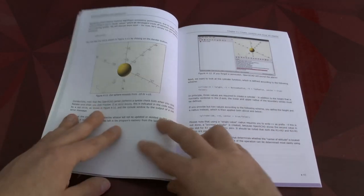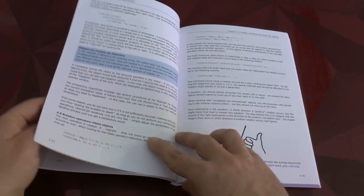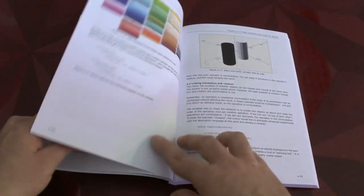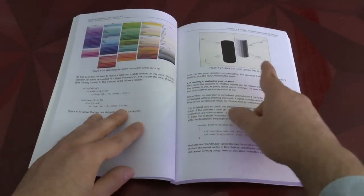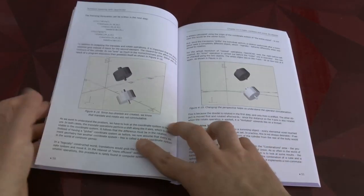And then the rest of the chapter you see here it's basically rendering, rendering more objects, rendering round objects, coloring the objects and this kind of stuff.